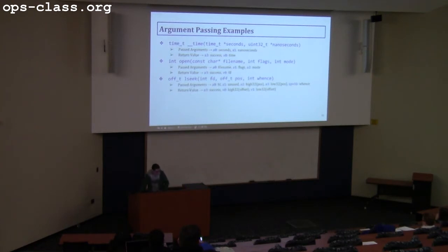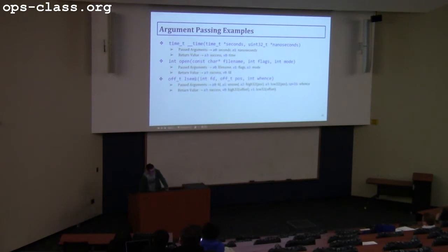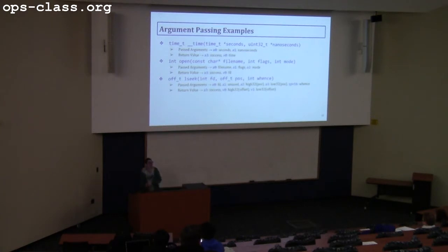For lseek, you pass the file descriptor in A0 (32-bit). The position or offset is 64-bit, so A1 is unused and it goes into A2 and A3. The whence argument goes into the stack pointer plus 16. This is the most difficult one you'll need to handle — all other syscalls should just be 32-bit. The return value: A3 indicates success or failure, and since we return the offset (64-bit), it should go into V0 and V1.